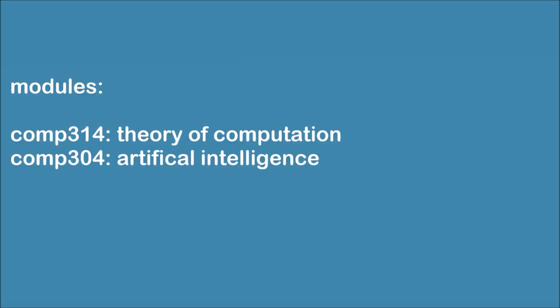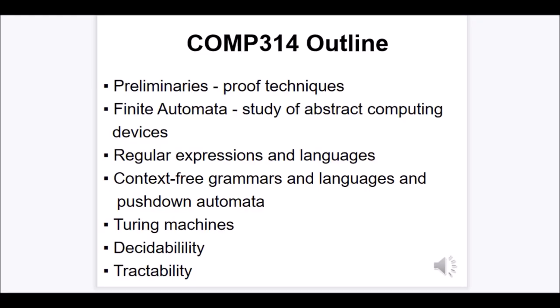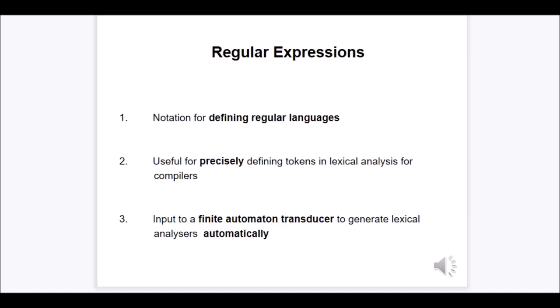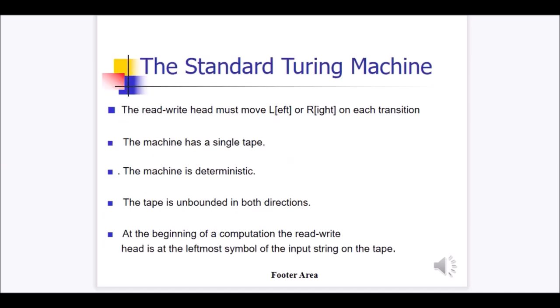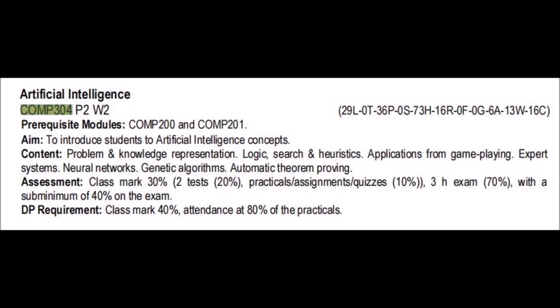For theory of computation, the module covers topics like finite state automata, regular expressions, and Turing machines. I personally found this module the most difficult out of all four. For artificial intelligence, the intro lecture reminded me why I studied computer science in the first place.